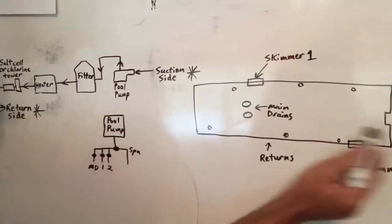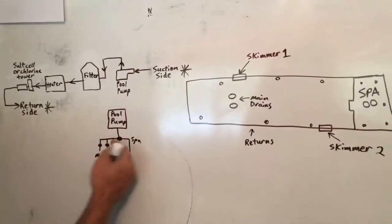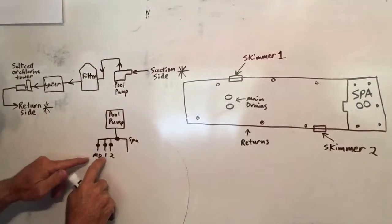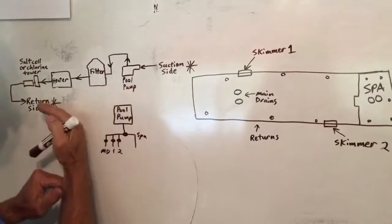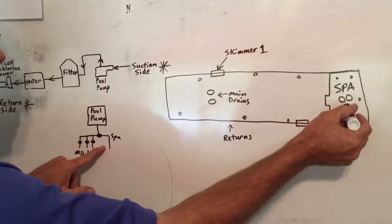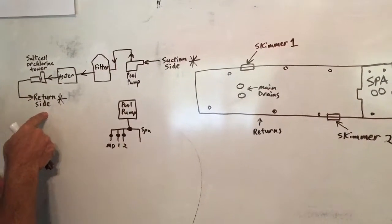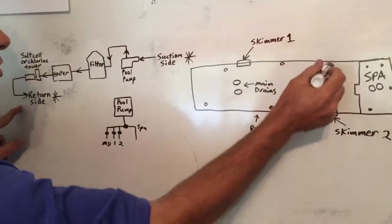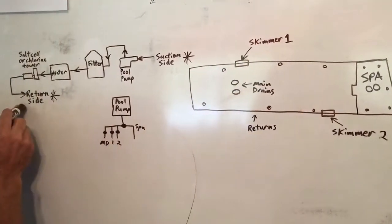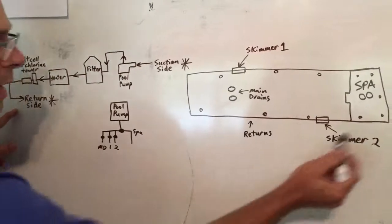When you think spa, you want to cut everything off pool side. So now I'm going to switch this valve, turn it around and everything, the main drain, skimmer one, skimmer two, that's all cut off. Now I only want to pull water from the spa only. And then I'll change the valve over here on the return side so that I don't send it back to the pool at all. I'm going to only draw water from the spa and send water back to the spa.